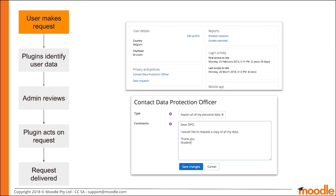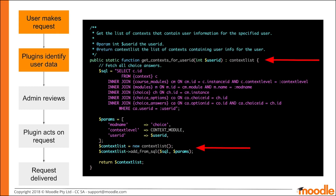Users can make a request via the new data privacy tool. There are two types of requests that they can make: a request to export their data, and a request to invoke their right to be forgotten. After a request has been made by a user, your plugin will be asked to identify which Moodle context it stores that data in.